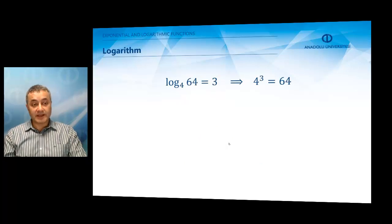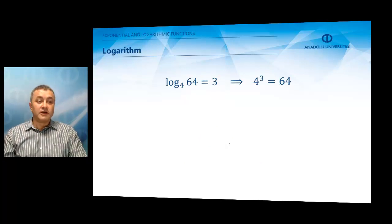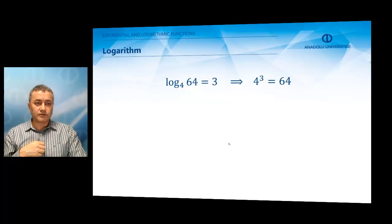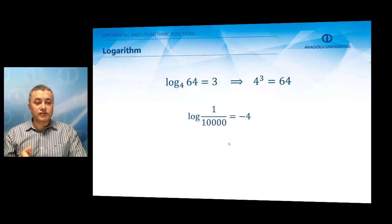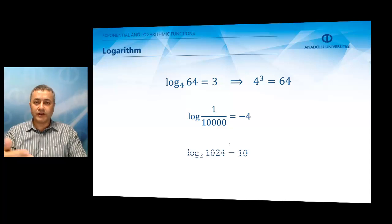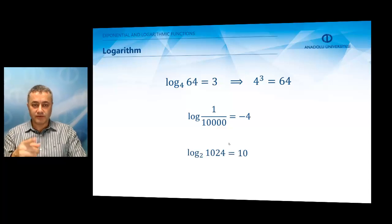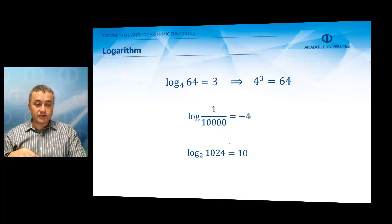Let us give some examples of how the logarithm works. Let us calculate logarithm of 64 to the base 4. This is 3, as we see from the screen. Why is it 3? Because 4³ = 64. If we try to calculate logarithm of 1/10,000, we get -4. All you have to do is follow the previous example.